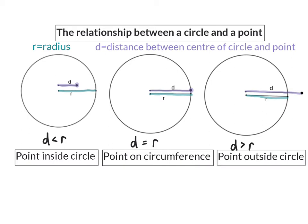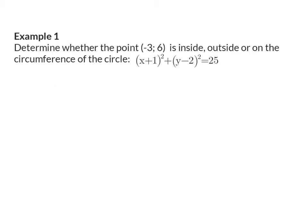Let's have a look at how we're going to use this in a question. Example one: determine whether the point (-3, 6) is inside, outside, or on the circumference of the circle. To answer this question we need to know the distance between the center of the circle and the given point, and we need to know what the radius is. The radius we can easily calculate because we know 25 is radius squared, so the radius will be 5. To calculate the distance between the center of the circle and the point we are going to use our distance formula.